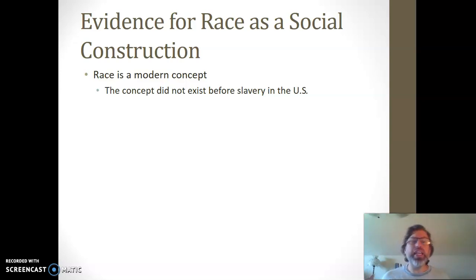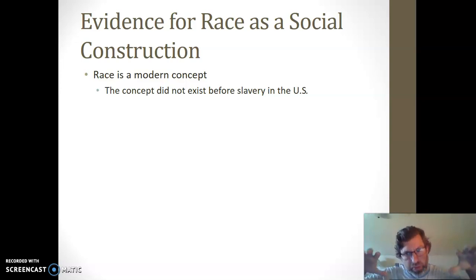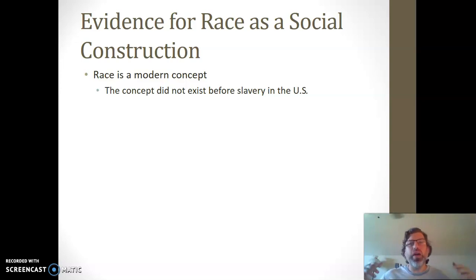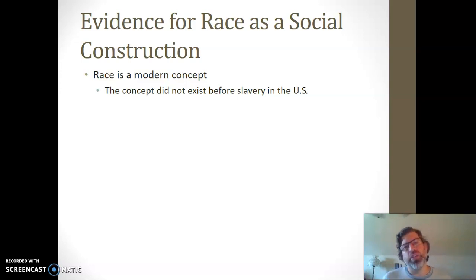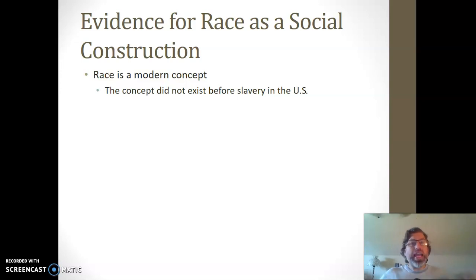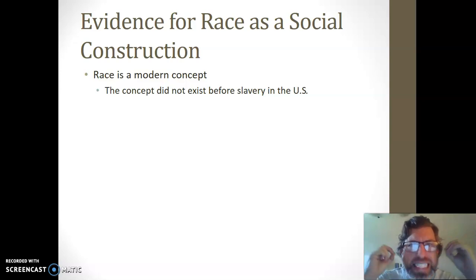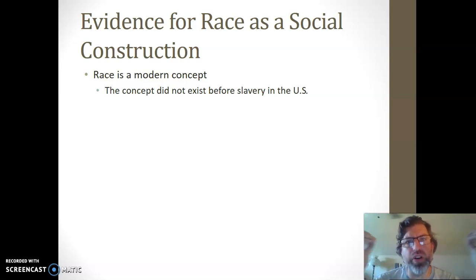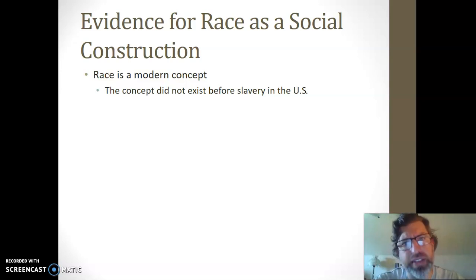The first piece of evidence is that historically speaking, before slavery — before the transatlantic slave trade — race doesn't exist as a concept. Race is a thoroughly modern concept that is bound up with the creation of slavery. If you go back to, for example, ancient Rome, slavery exists to be sure, and people do talk about different groups as different from one another. But the connection between physical distinctiveness — the physical component of what we call race — and social difference just doesn't exist.